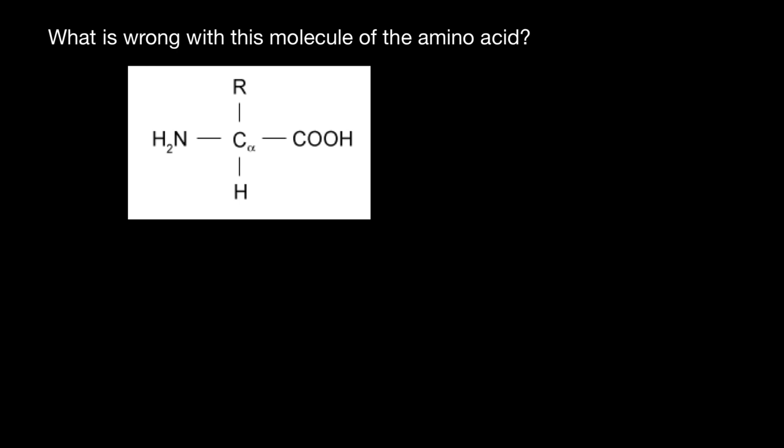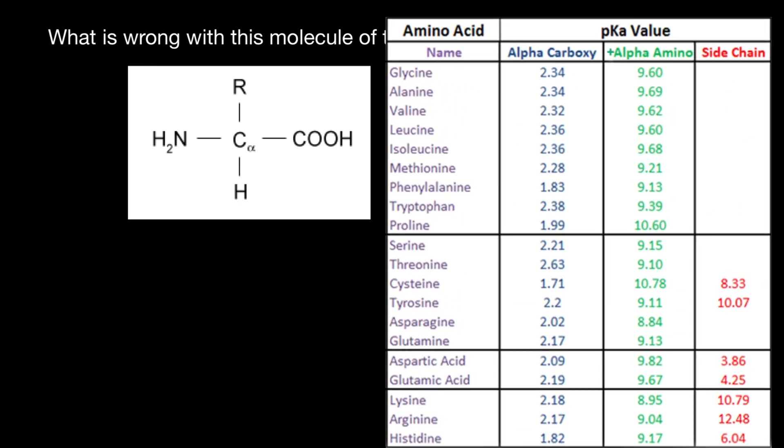In order to answer this question, let's take a look at this table. What we see here is 20 amino acids and three groups: alpha carboxy group, so it is here, alpha amino group, it is here...